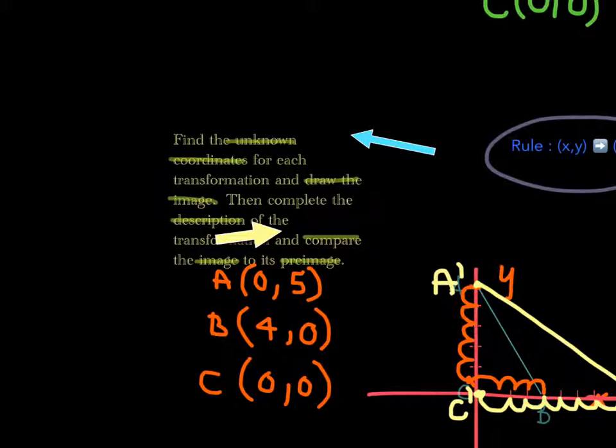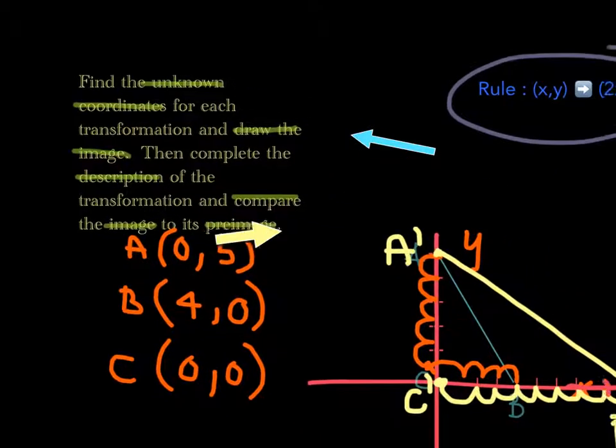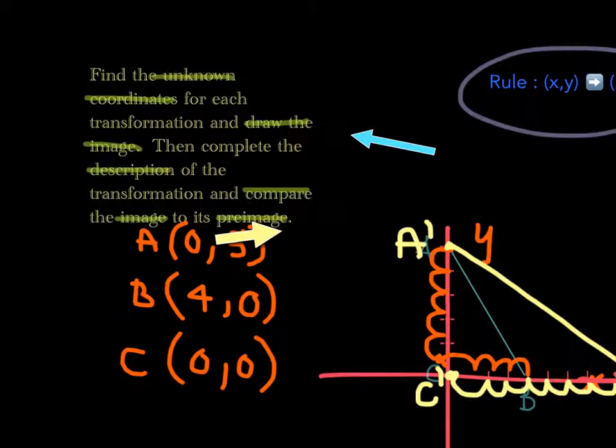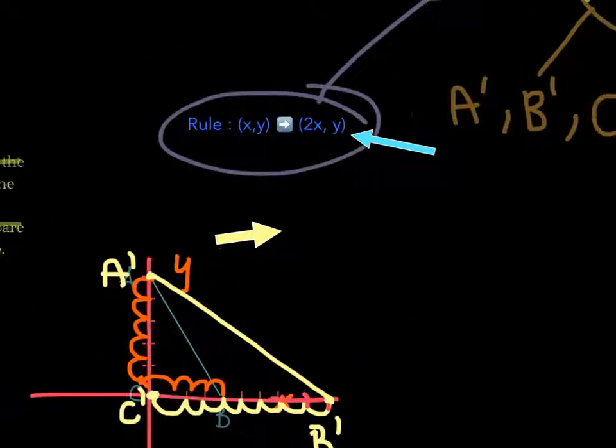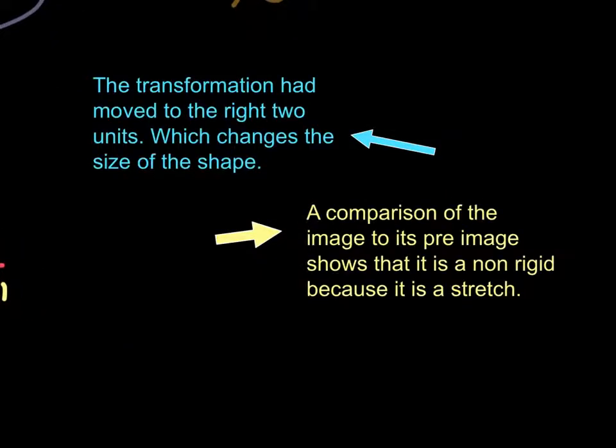So on the questions right here, the third thing that we need to do is the description. And the fourth thing is compare the image to its pre-image. I wrote a description right here as an example that the transformation had moved to the right two units, which changes the size of the shape. In a comparison of the image to the pre-image, it is a non-rigid because it is a stretch. A non-rigid means when it is changing the size of the shape.